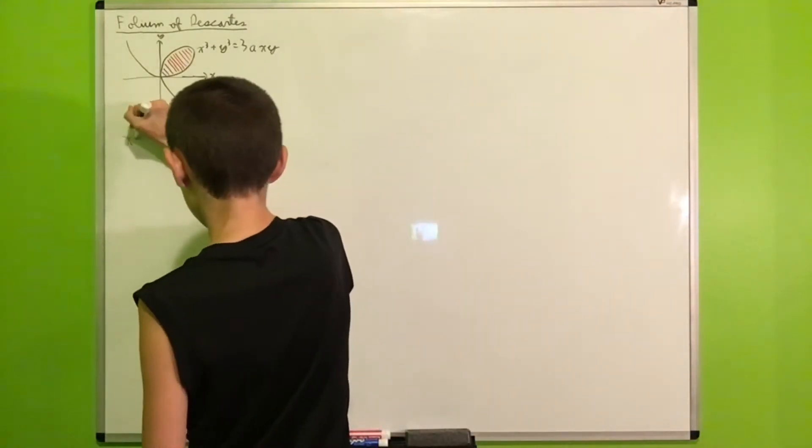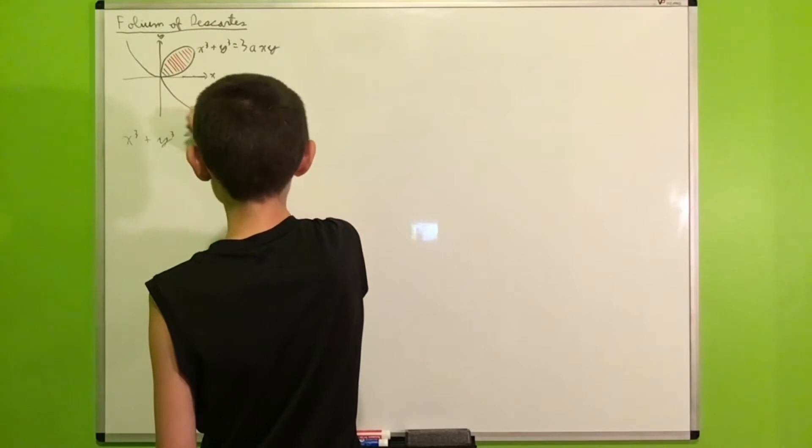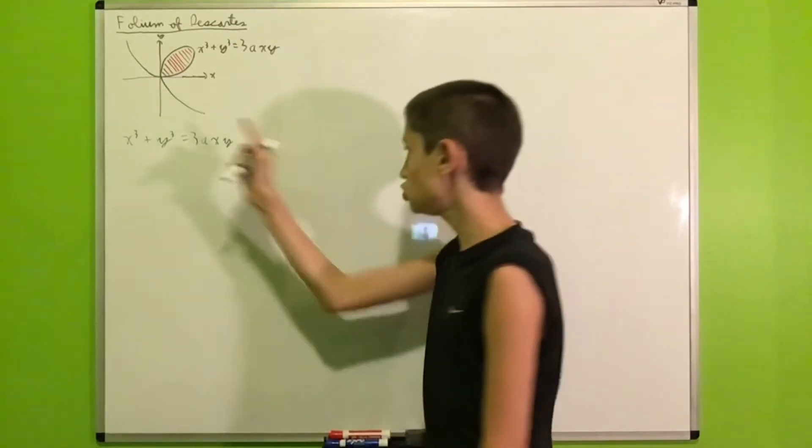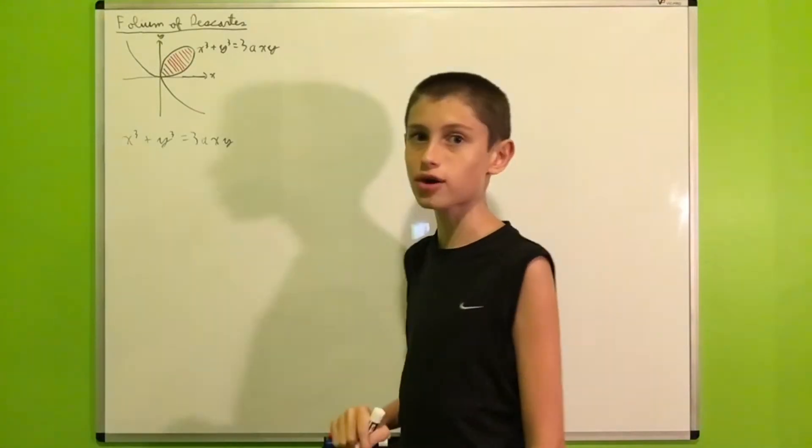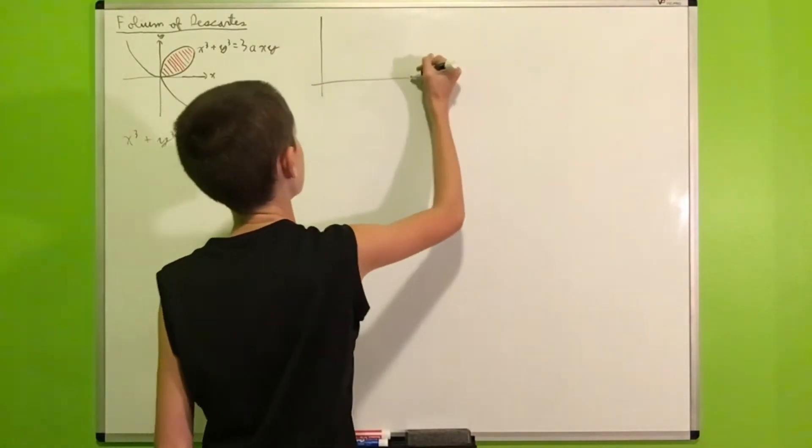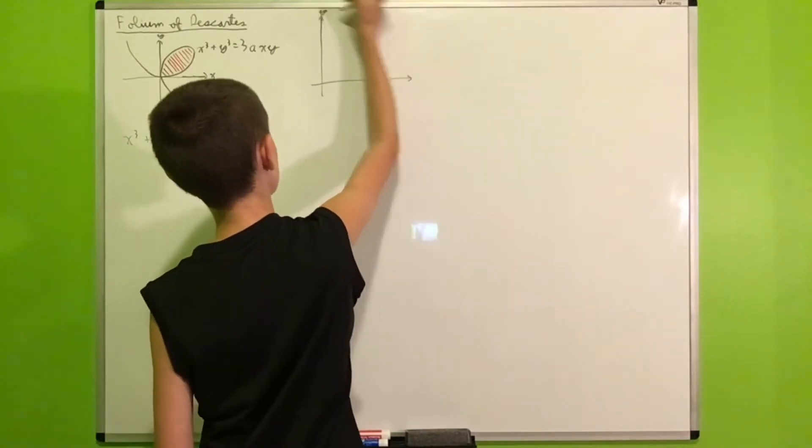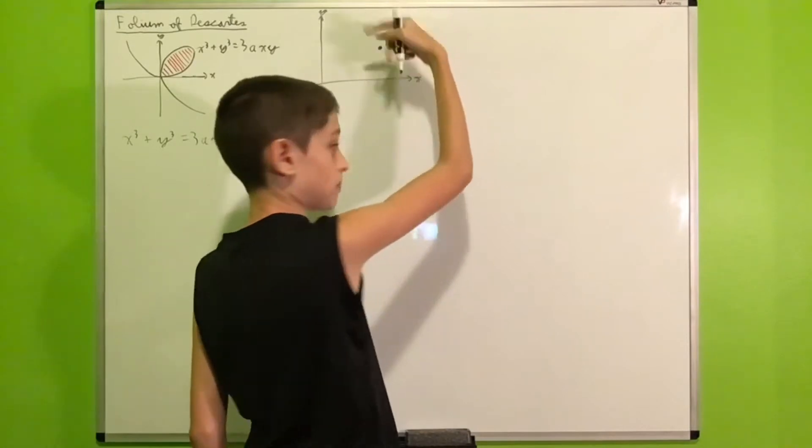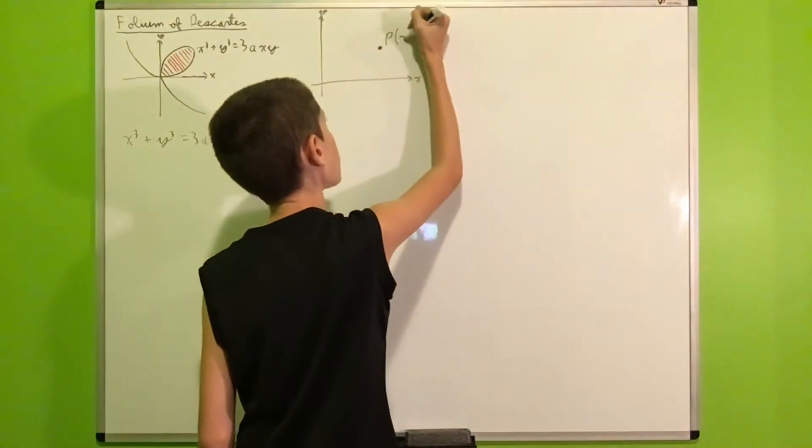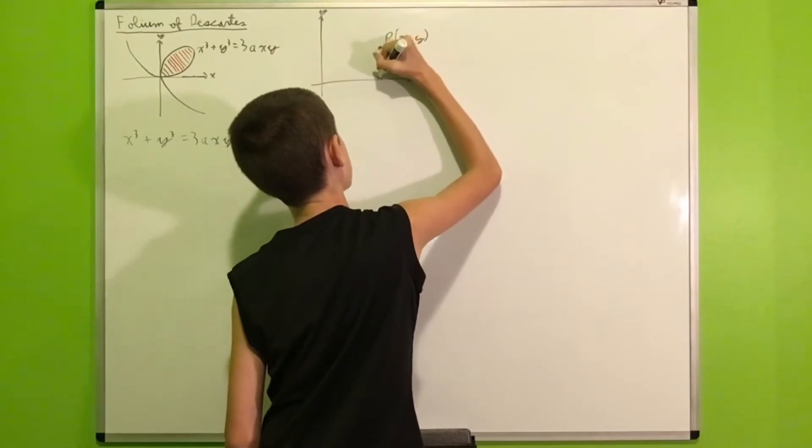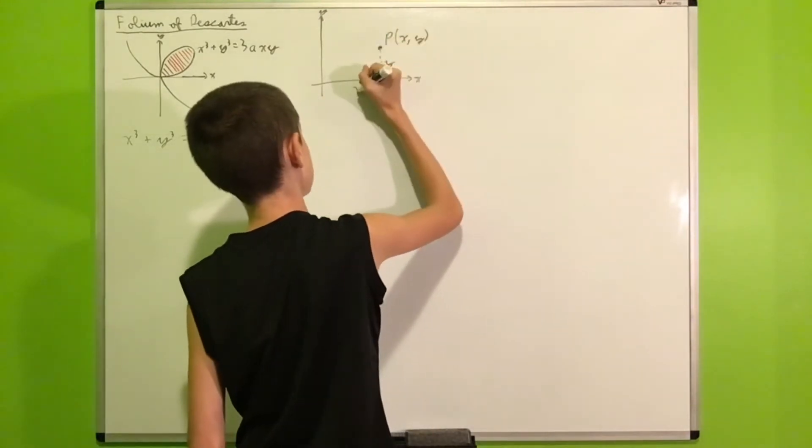So first, we'll transform our equation x cubed plus y cubed equals 3axy into polar coordinates. So how can we do that? Well, I would like to take a look at the Cartesian plane. So this is y-axis, x-axis. So let's pick a point P in the plane with coordinates x and y. So let's draw the perpendicular. So this is y and this is x.